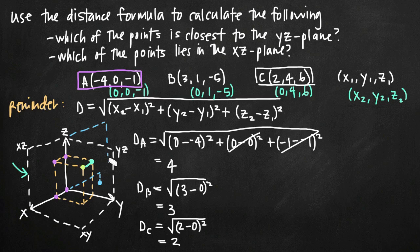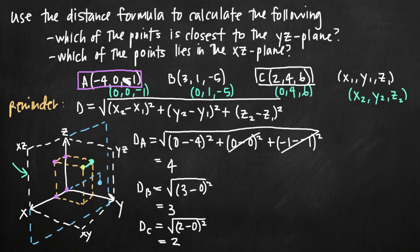That point (-4, 0, -1) still lies in the xz-plane. If we extended the xz-plane and made it larger, that point would lie in that plane because the y value in that coordinate point is 0.